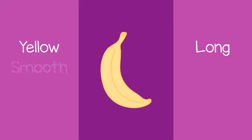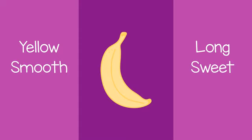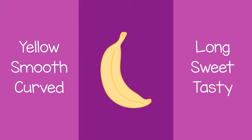You could say, 'It's smooth.' They might say, 'It's sweet.' You could also say, 'The banana is curved.' Then they might say, 'It's tasty.' You can go back and forth and see how many describing words you can use.